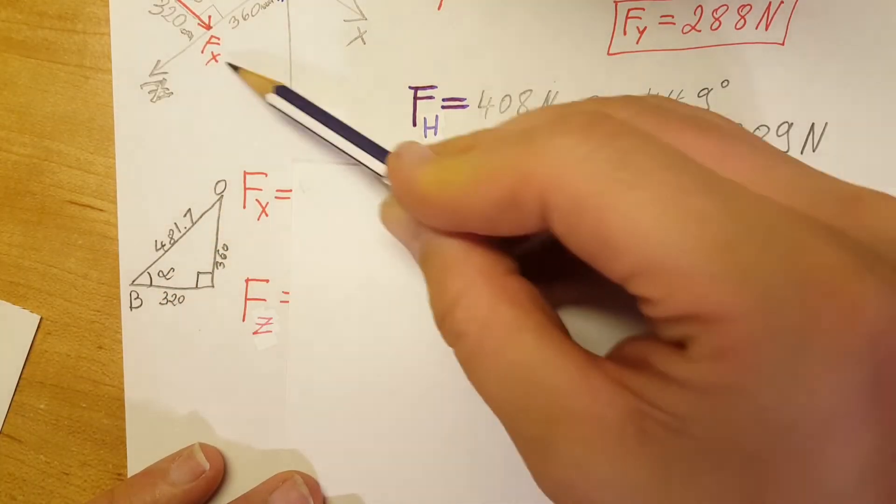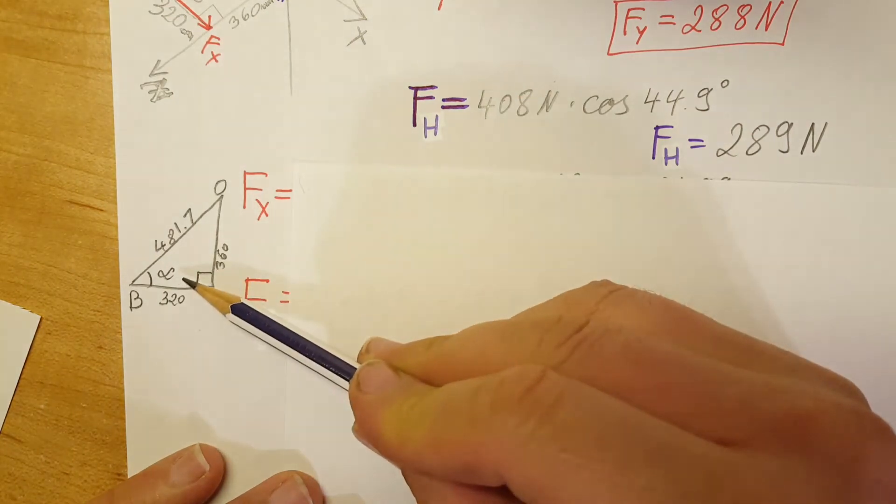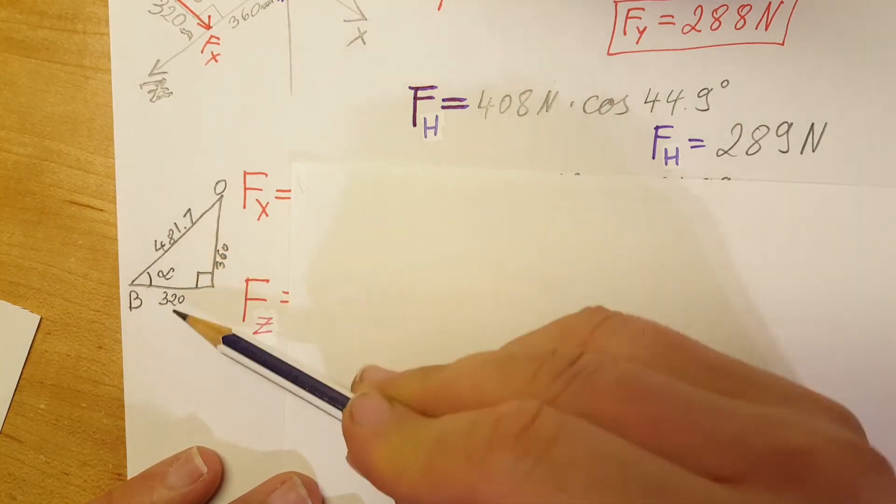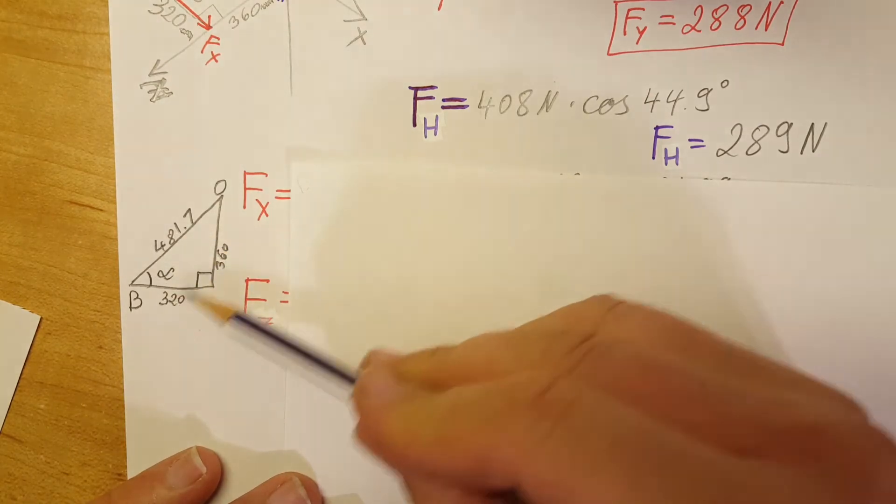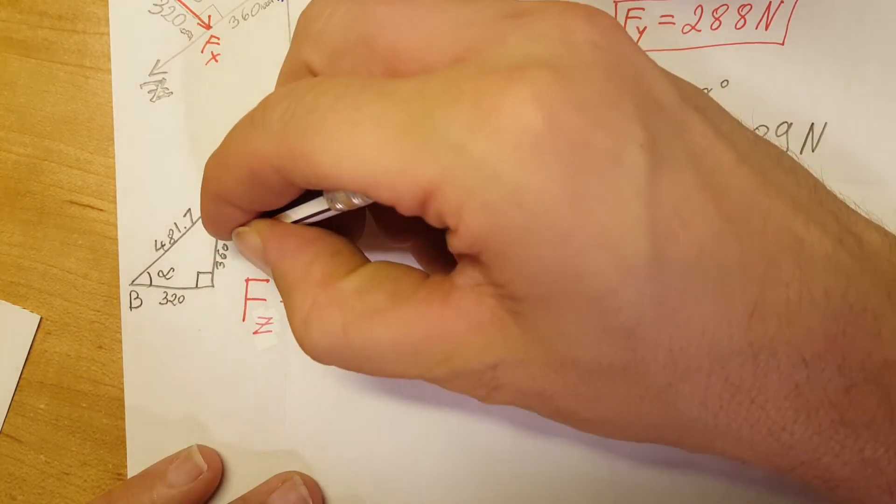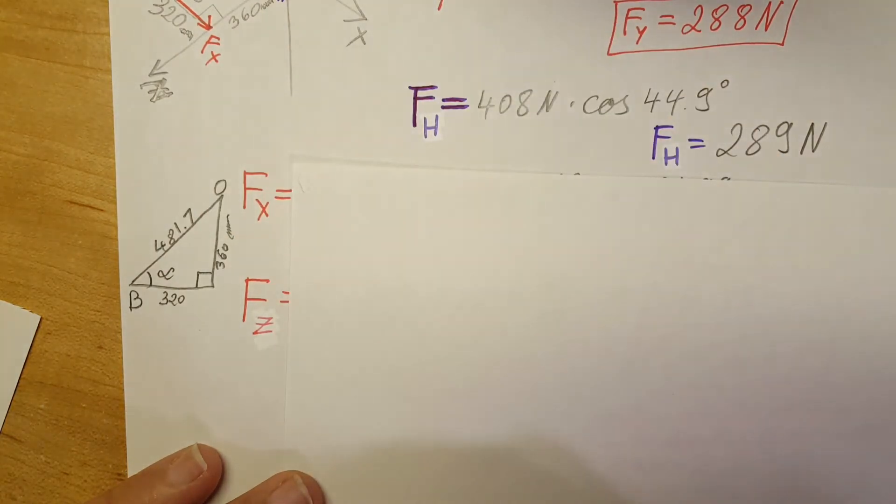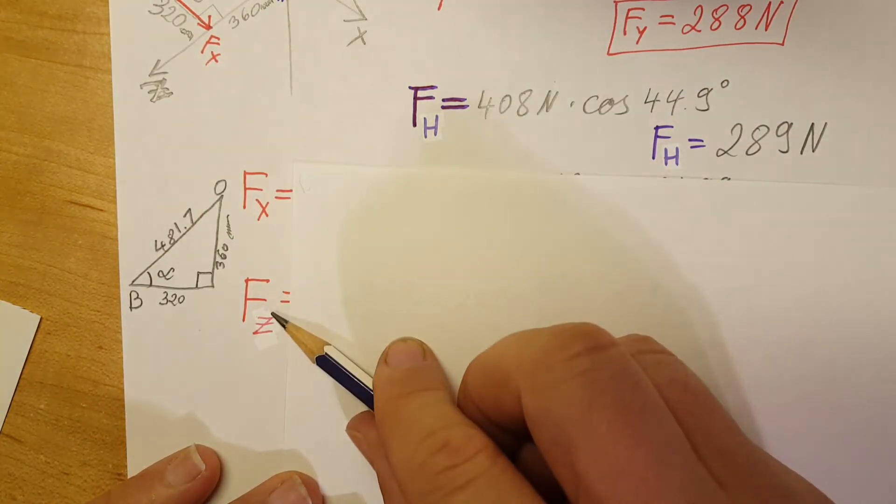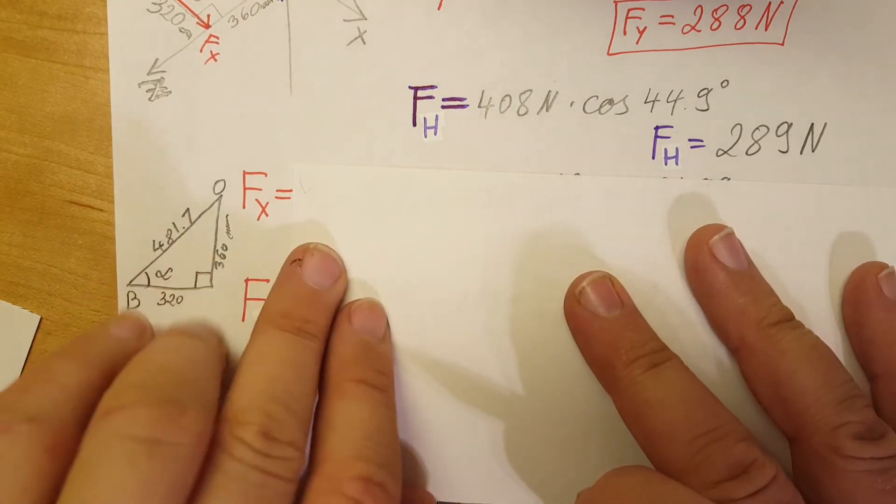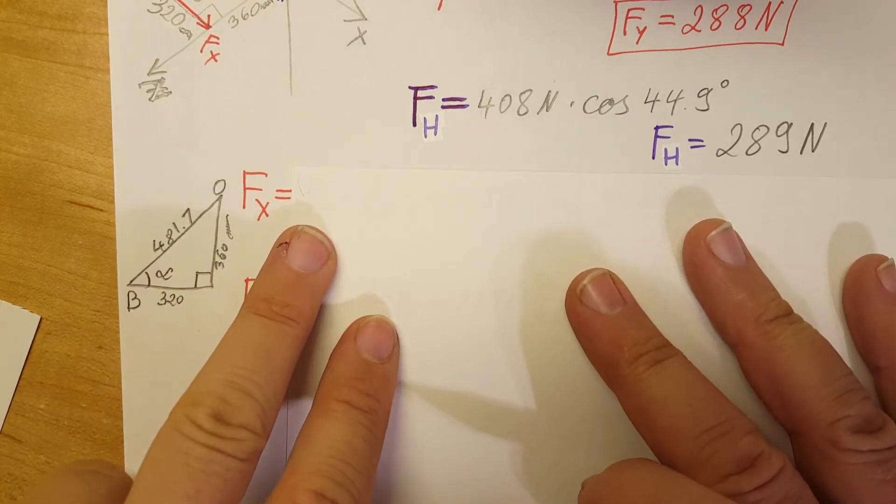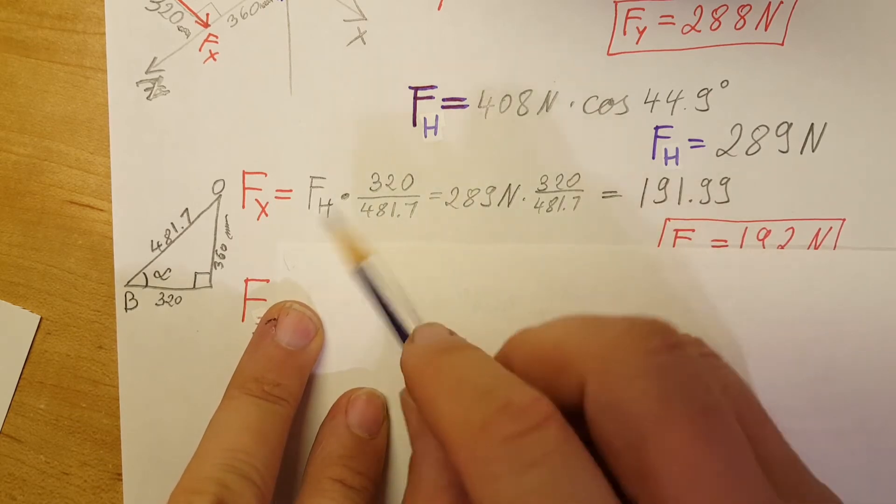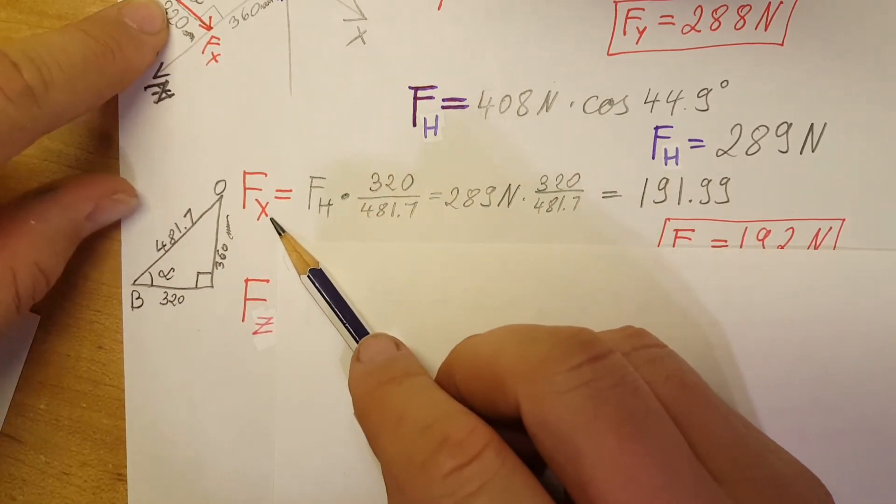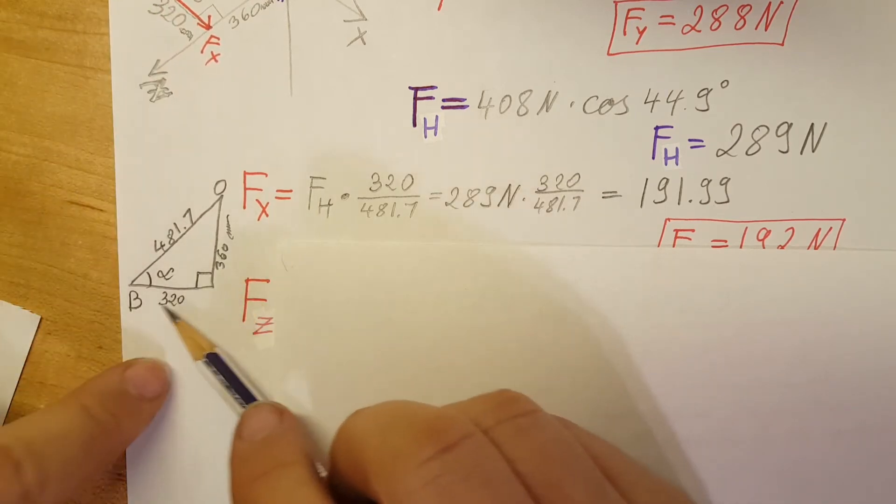There you go, B, A, and this corner right here. We have this measurement, this measurement, and this measurement—these are the millimeters of the triangle, the actual distances in millimeters. Now we're going to go ahead and find FX and FZ, the last two remaining components of the force.